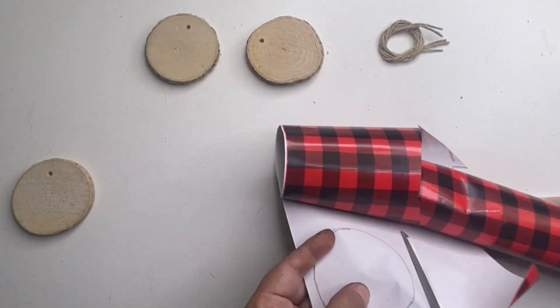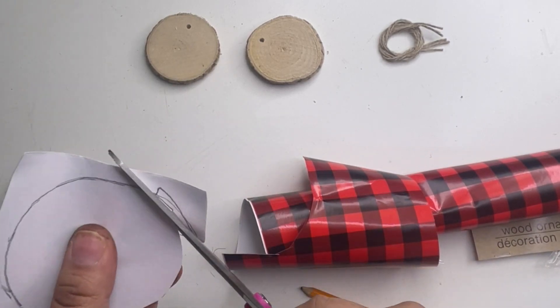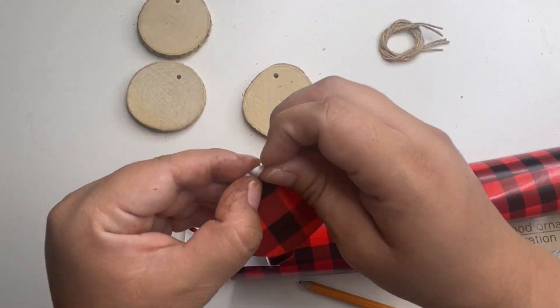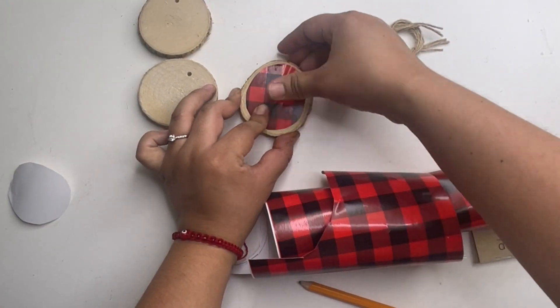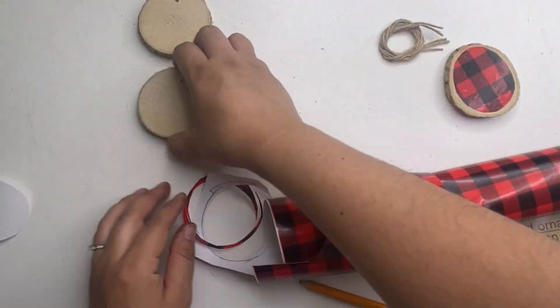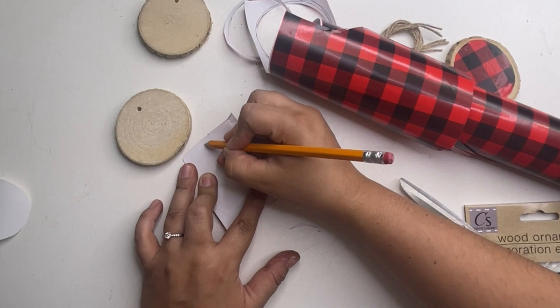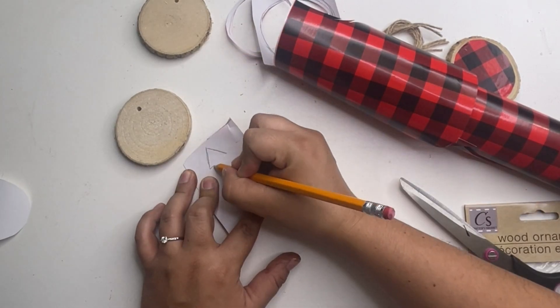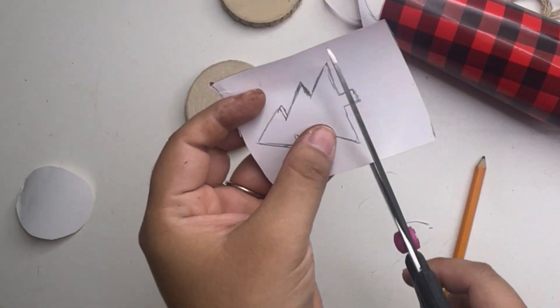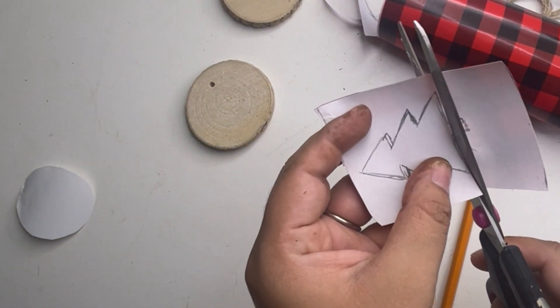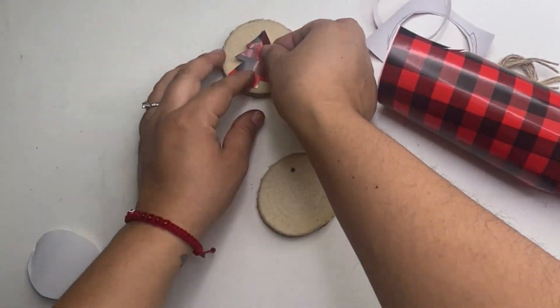Instead, I decided to just add like random things to these. On one of them, I covered the entire thing using this Dollar Tree vinyl. And then on the other one, I made a tree. And on the last one, I made an ornament. You can definitely make other images with these and just use the vinyl sticker and add it to that.